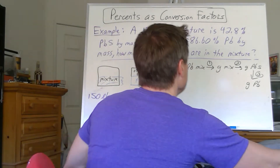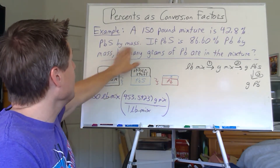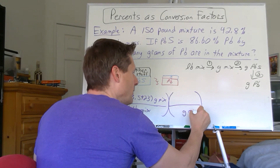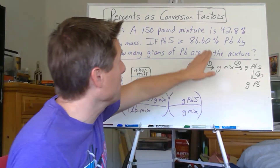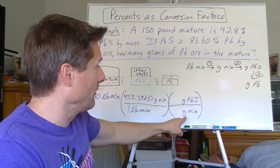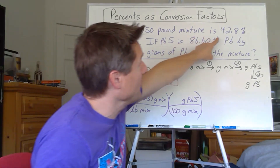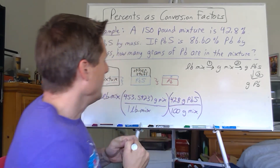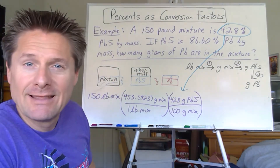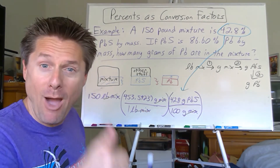Now I'll apply the 42.8% — that says 42.8% of that mixture is the lead(II) sulfide. We want grams of the mixture on the bottom and grams of the compound on the top. Assume 100 grams of the whole mixture; if there's 100 grams of that mixture, there's 42.8 grams of the lead(II) sulfide. So the conversion factor is 42.8 g PbS over 100 g mixture. Grams of mixture cancel and we're now in grams of the compound. That's what percents are for — a conversion factor between a part and a whole.